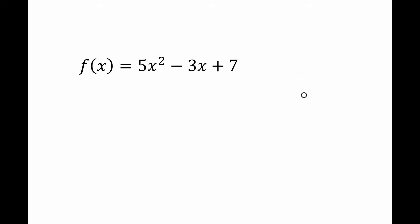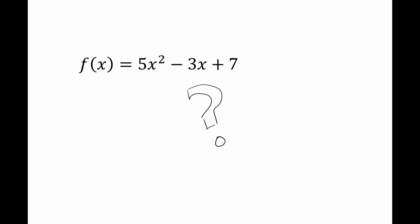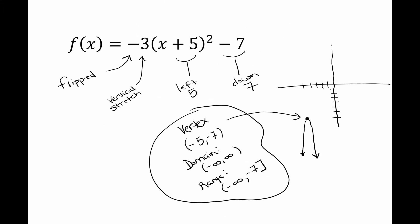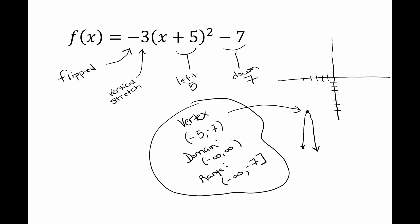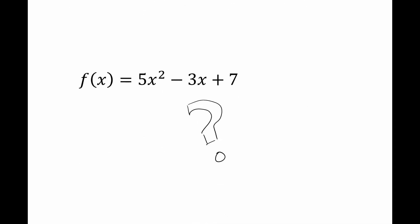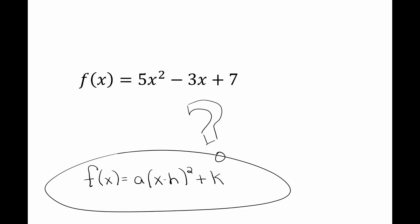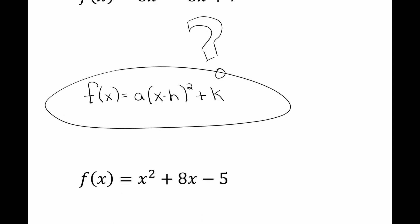Now the problem is if I have a polynomial in a different form, I can't look at it and immediately tell what direction it goes — left, right, up, or down. With the previous form I could tell all that just by looking, but with this one I can't. So what if I set it up in the form of the previous problem? There's a generic form of the first parabola we saw, and our goal for this video is to make this parabola look like the first one.